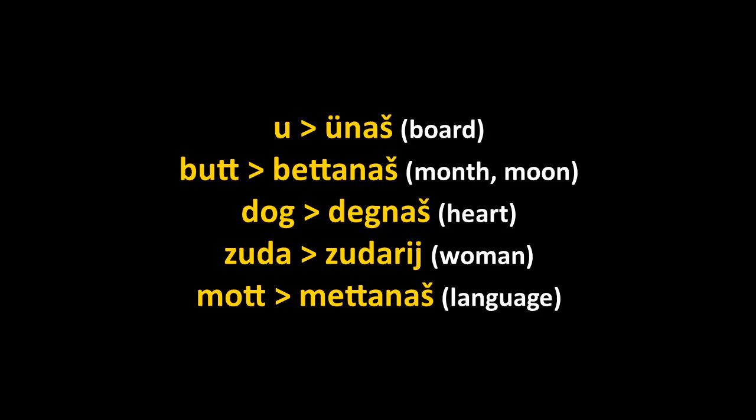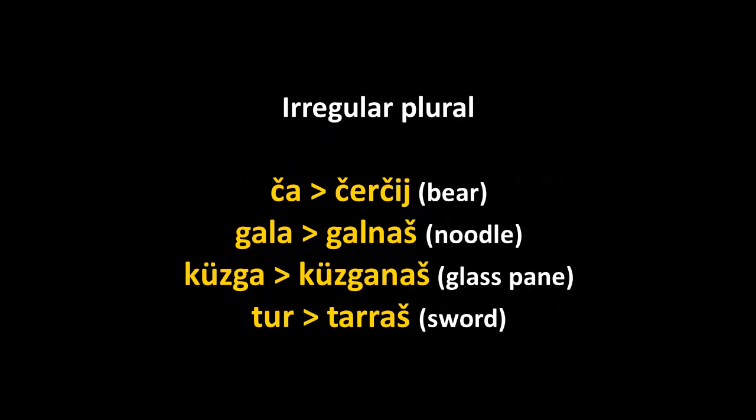There are more irregular plurals: cha is 'bear' and its plural is tcherti. Gala is 'wall' and makes galnash. Kuzga, which is a glass pane or mirror, has kuzganash. Tur, which is a sword, has the plural tarrash. A lot of plurals are irregular in Chechen — vowel changes and ablauts in the stem vowel are extremely common.